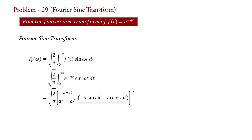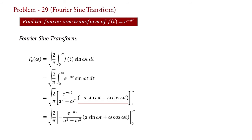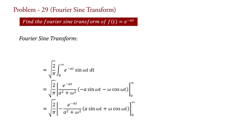Now putting the values of limits: Fs(omega) equal to square root of 2 upon pi, into bracket e raised to minus a t upon (a squared plus omega squared), into bracket minus a sine(omega t) minus omega cos(omega t), over limit 0 to infinity.